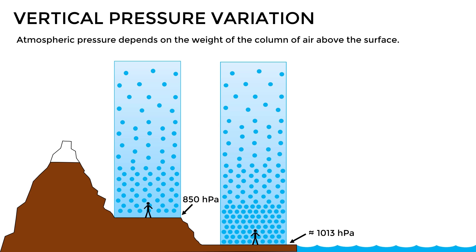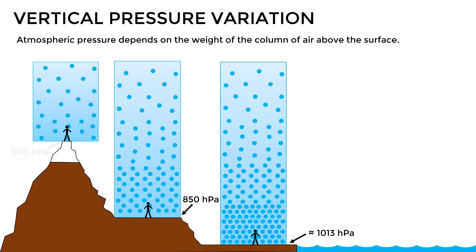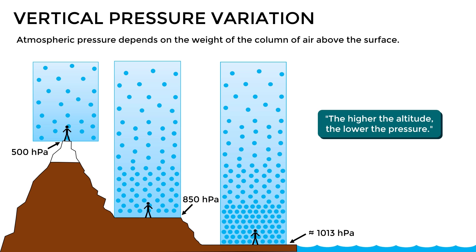In this order of ideas, if we go even higher — for example, to the top of a mountain — there will be even less air above us, and therefore the pressure will be considerably reduced, obtaining values of around 500 hectopascals. In summary, we can say that the higher the altitude, the lower the pressure.